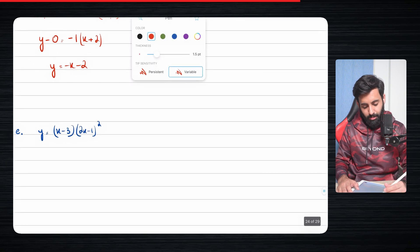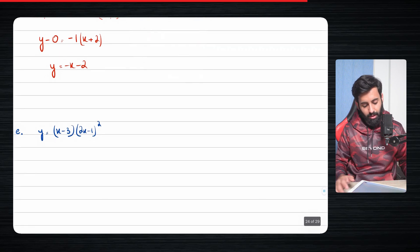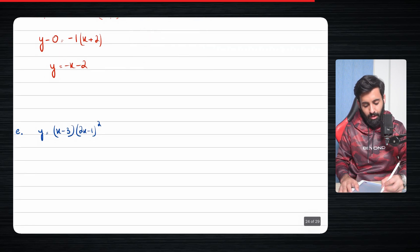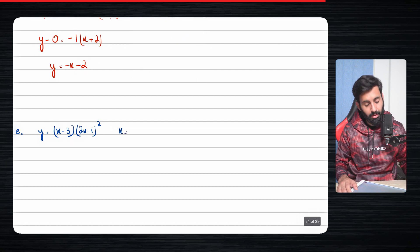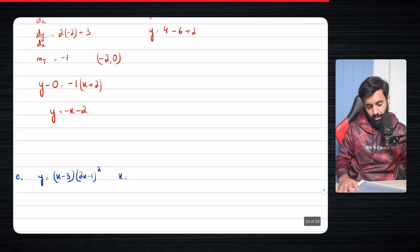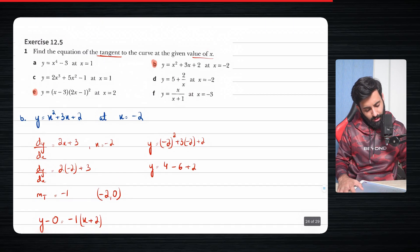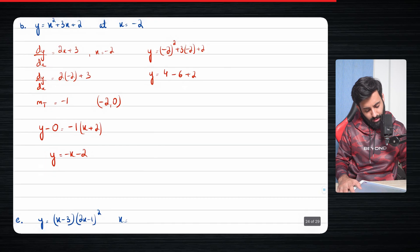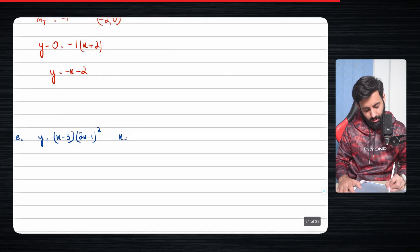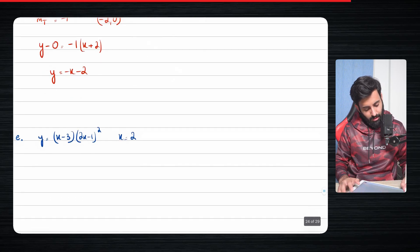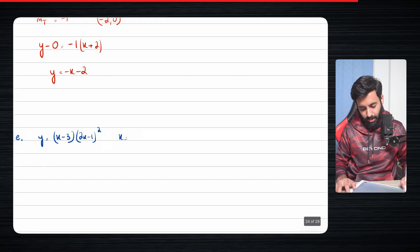Now we do part e — same concept, but this time the expression you have to differentiate is going to be done using the product rule. The value of x is two in this case. So let's find out dy/dx.